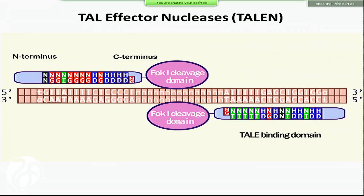TALENs don't cleave the DNA by themselves. Smart molecular biologists attached another piece of protein — an enzyme that cleaves DNA called FokI — to the DNA-binding protein. FokI needs to dimerize to cleave the DNA. So you need two hybrids, each with a DNA-binding domain and a cleavage domain — two monomers.